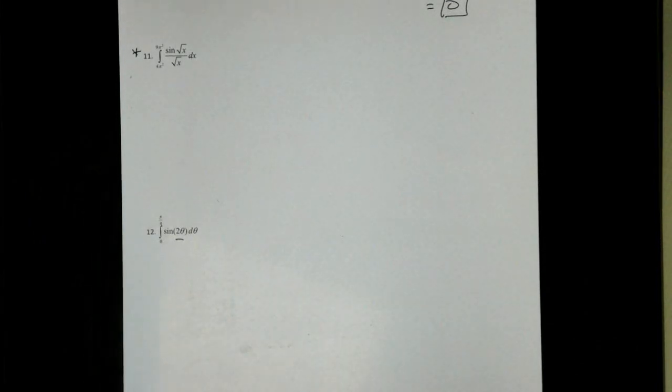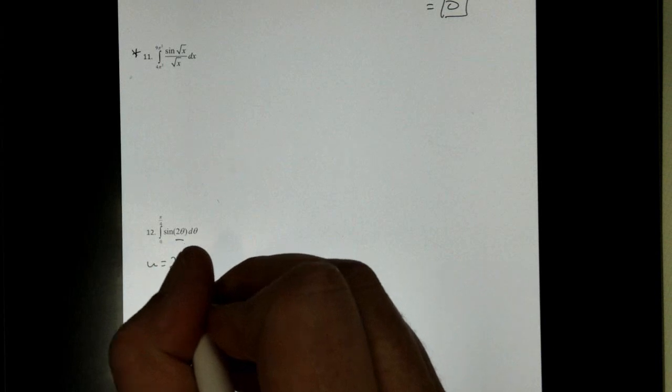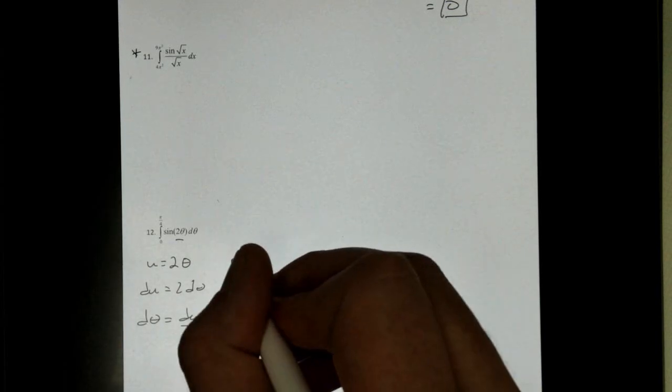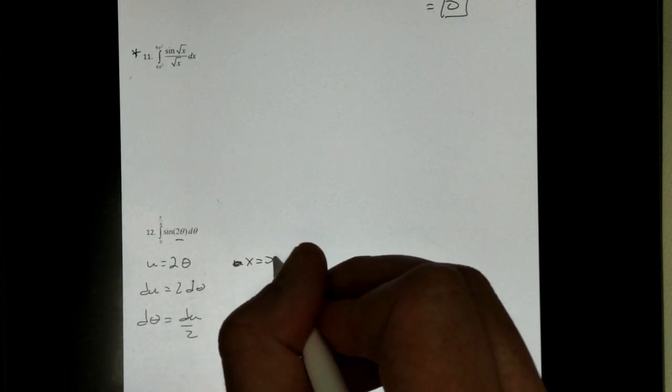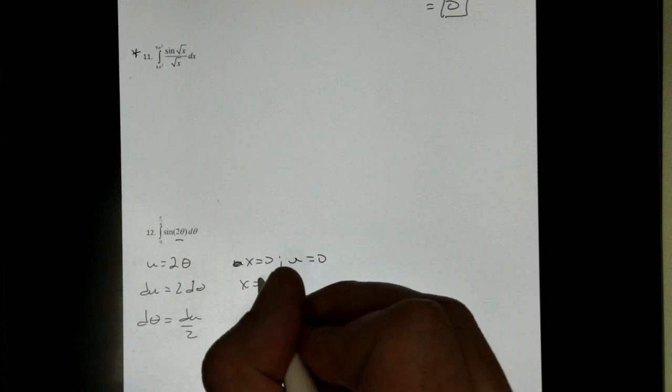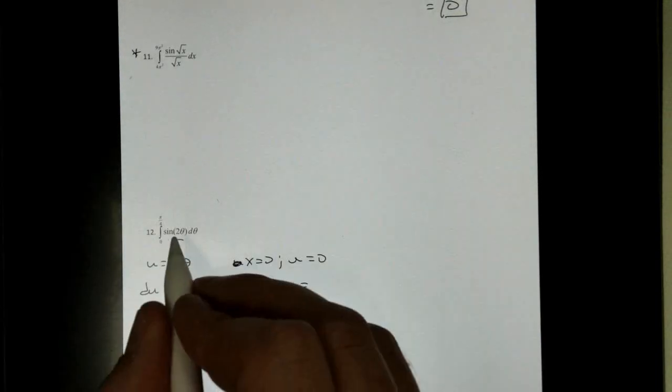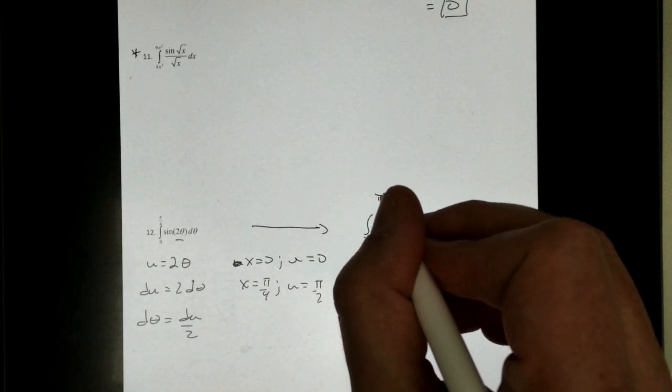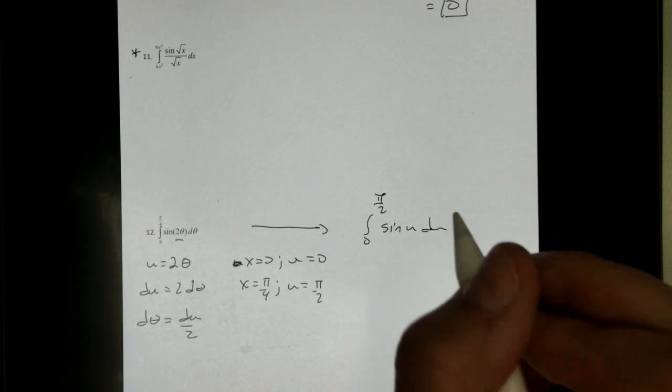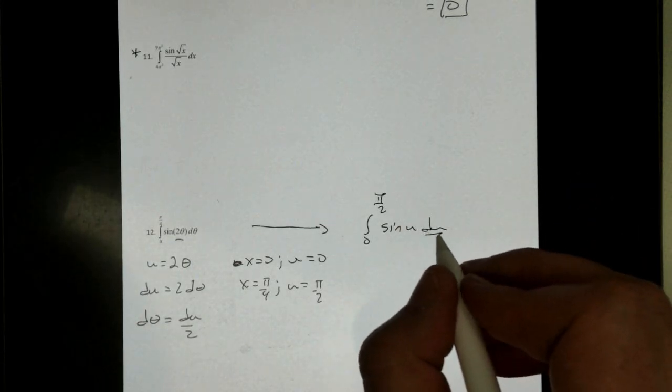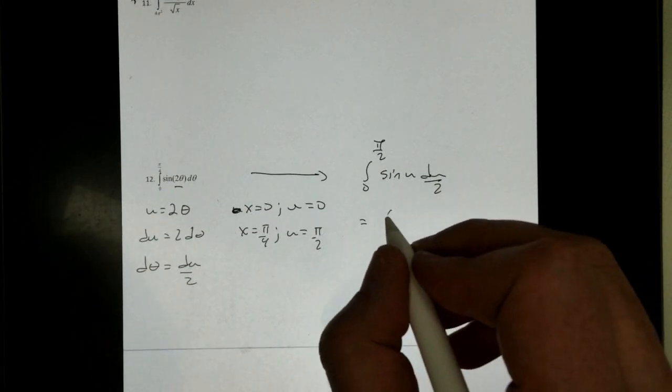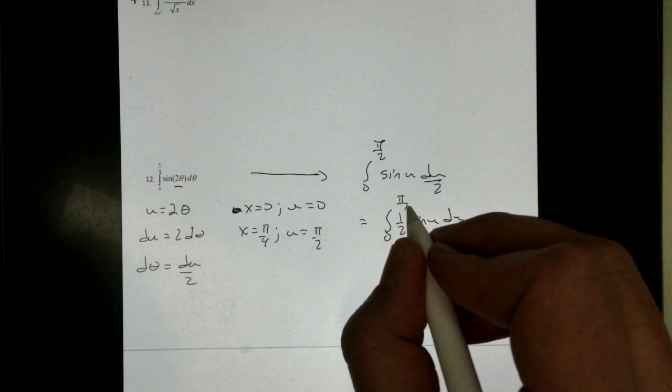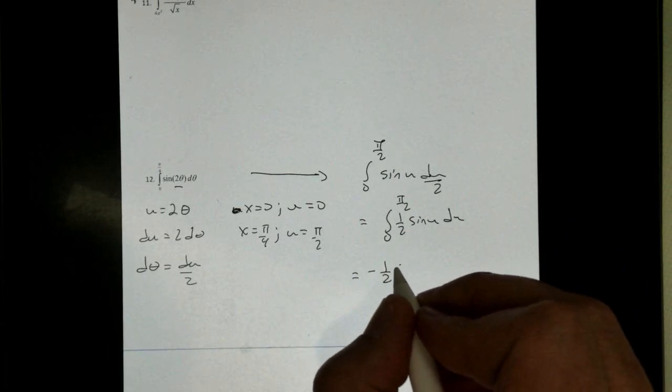Again, this is u substitution, because we're using theta, it's kind of scary. u is 2 theta, our du is 2 d theta, so we get d theta is du over 2. Changing your domain, when x is 0, u is just 0, when x is pi over 4, pi over 4 times 2 is just pi over 2. I'm going to rewrite our integral from 0 to pi over 2, and that gives us sine of u du over 2. So again, this is just going to give us 1 half, sine of u, du from 0 to pi over 2, and the antiderivative of sine is negative cosine, so we get negative cosine of u. Now notice this, I'm going to put the negative on the outside there, that's okay. 0 to pi over 2.